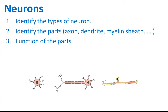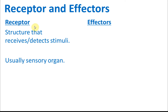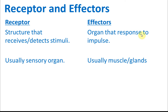Before we start discussing neurons, we need to know what receptors and effectors are. They are not part of the neurons, but they are organs that work closely with neurons. A receptor is a structure that receives or detects stimuli. The function of a neuron is to transmit impulses, which are generated by stimuli. Receptors are typically sensory organs such as your eyes, skin, tongue, and nose.